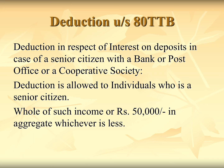Section 80 TTB allows a deduction in respect of interest on deposits held by any senior citizen with a bank, post office, or a cooperative society carrying on a banking business. The deduction is allowed to individuals who are senior citizens. The amount of deduction will be rupees 50,000 or the whole of such income, whichever is less. If the total interest is less than rupees 50,000, the entire amount is allowed; but if it exceeds rupees 50,000, the maximum deduction will be rupees 50,000.